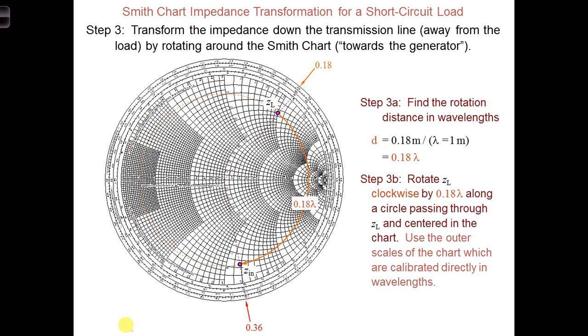Next we want to rotate a distance in wavelengths. So d in terms of wavelengths, we divide by the wavelength. We get 0.18 lambda.